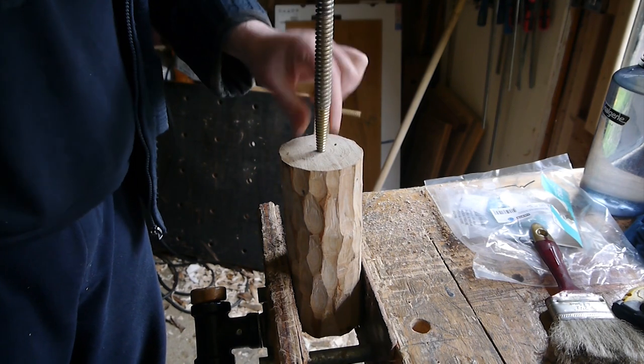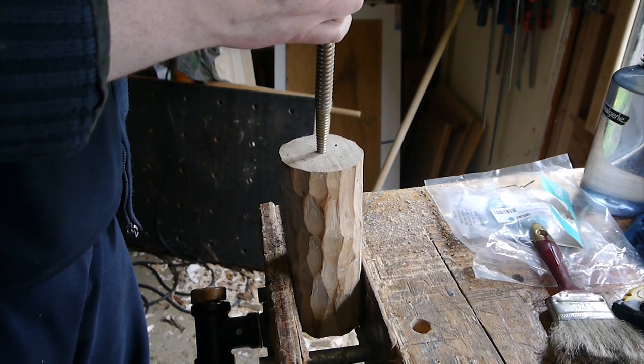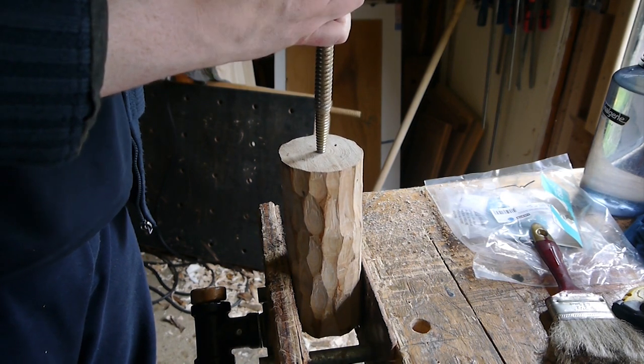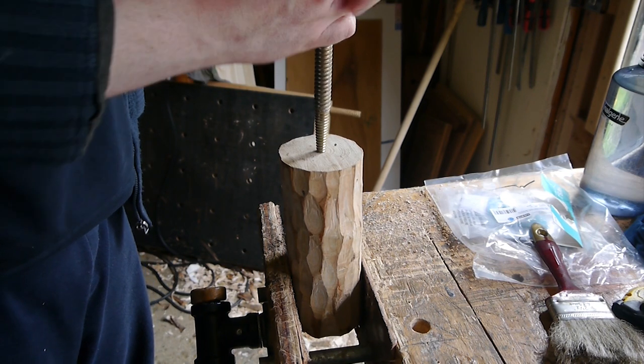Good thing about the tapered shape of it is that if it comes loose you can just screw in a bit further and it becomes tight again. We'll probably have to re-tighten this as we carve the piece.